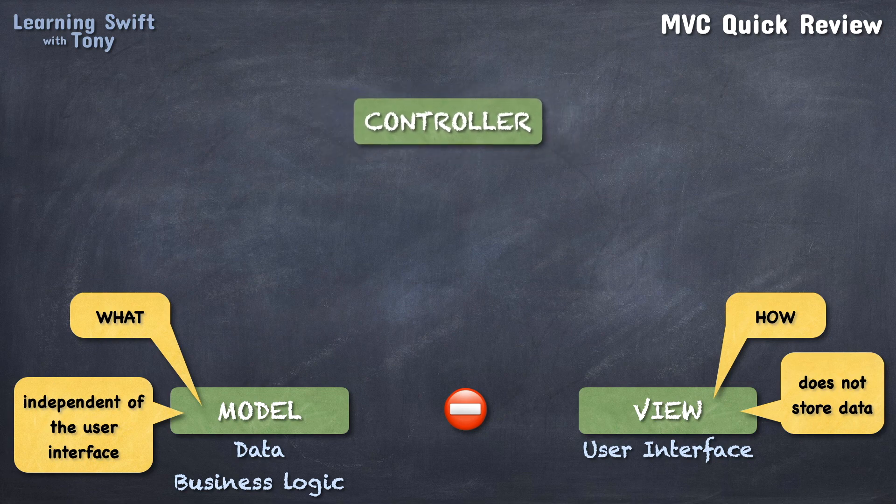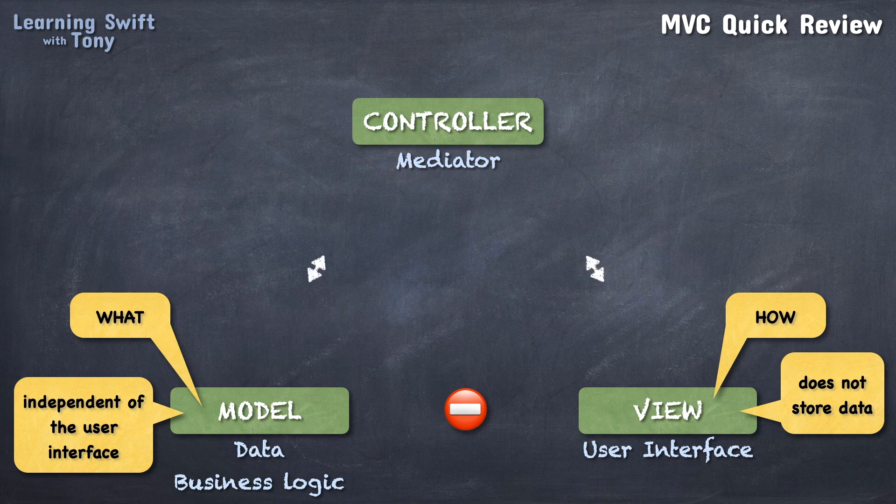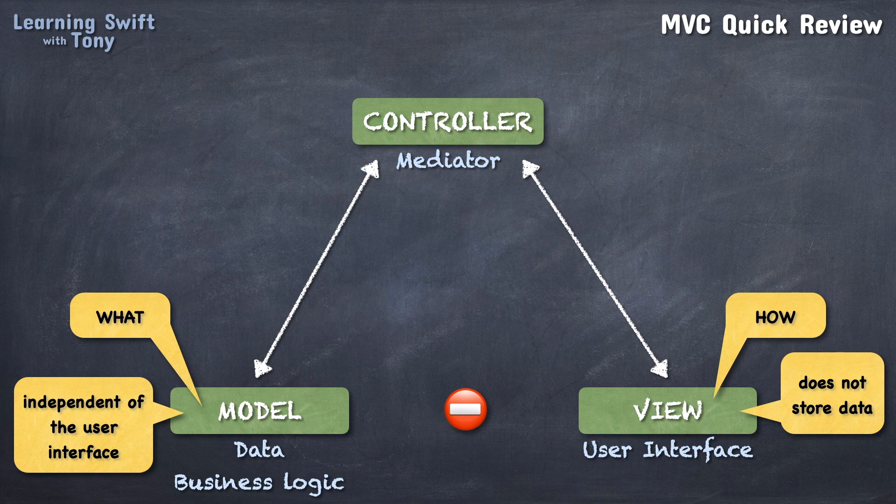The controller is the middleman that acts as a mediator between the model and the view. It is the controller that communicates with both the model and the view and translates messages between them as necessary. That's pretty much all about the MVC concept, in a nutshell.